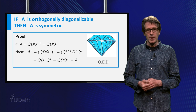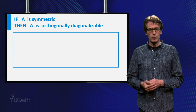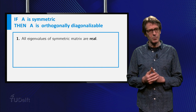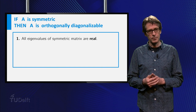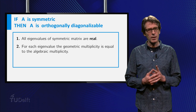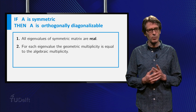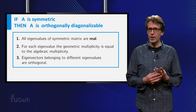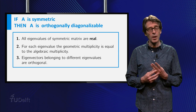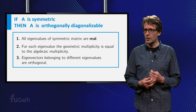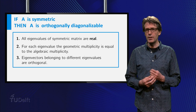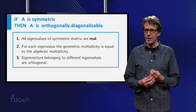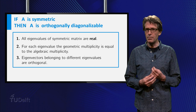The main theorem itself rests on three important properties of symmetric matrices. First, all eigenvalues of a symmetric matrix are real. Second, for each eigenvalue the geometric multiplicity equals the algebraic multiplicity. And third, eigenvectors for different eigenvalues are orthogonal. Note that the first two properties already imply that symmetric matrices are diagonalizable, namely they imply that there are sufficiently many eigenvectors.